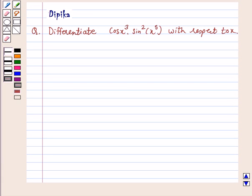Hi and welcome to the session. I am Deepika here. Let's discuss the question. Differentiate cos x³ · sin²(x⁵) with respect to x.